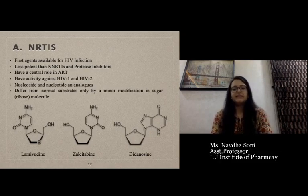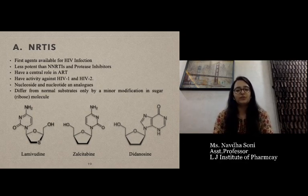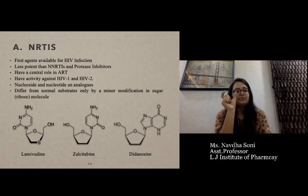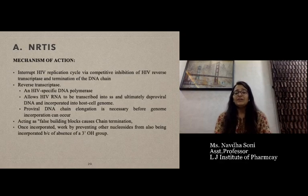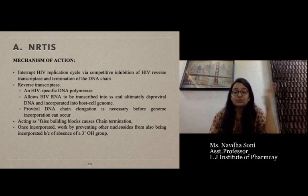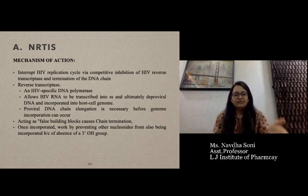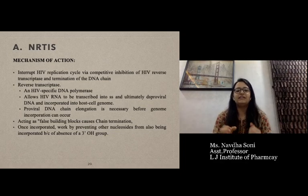NRTIs are first-line agents. They are nucleoside and nucleotide analogs that differ from normal substrates only by minor modifications in the sugar or ribose molecule. Examples include lamivudine, zalcitabine, and didanosine, with small differences in the ribose molecule but otherwise the same structure. The mechanism of action: NRTIs interrupt the HIV replication cycle via competitive inhibition of HIV reverse transcriptase and termination of the DNA chain.